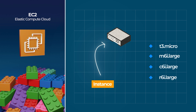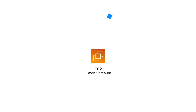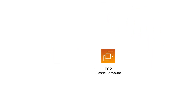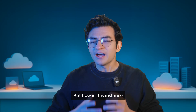You choose the type of instance you want — basically the CPU, memory, and storage. So we will create an EC2 instance and install our store application on it. This instance will respond when customers visit our site.